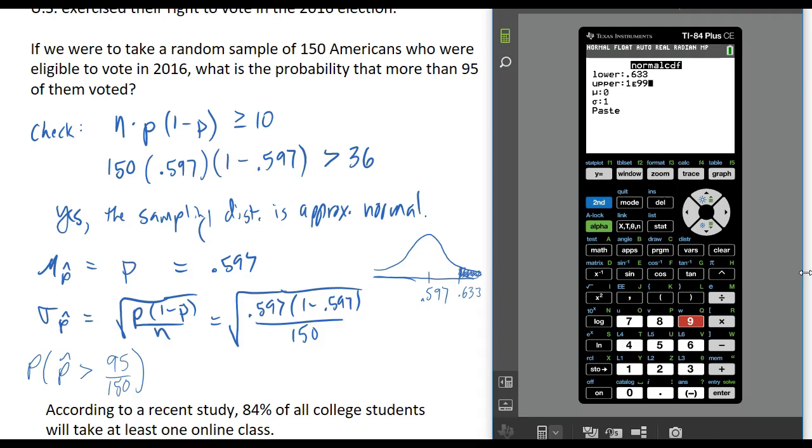We know proportions are always between 0 and 1, so we might even want to just use 1 as the upper. It doesn't really matter a whole lot because we're talking about values way over here in this tail, and what number we really use isn't going to make too much of a difference when we're so far out in the tail.